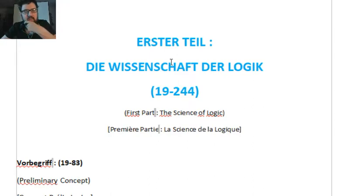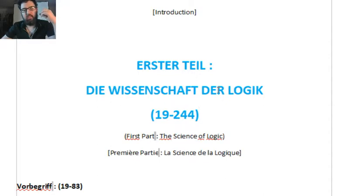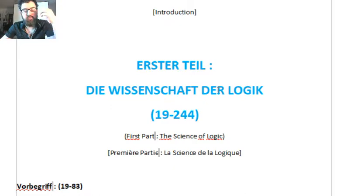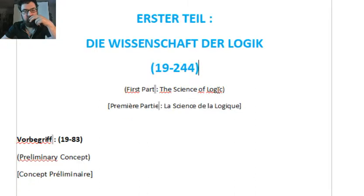The erste Teil of the Encyclopedia is Die Wissenschaft der Logik, and these are the paragraphs 19 to 244. Maybe the Wissenschaft der Logik of the Encyclopedia is simplified. The real, one might say the proper, the adequate science of logic is the one officially published between 1812 and 1816. This is just a simplified version, but it's a good start because if one understands in broad outline the thought determinations of this version, it's a lot easier to understand those of the official Wissenschaft der Logik.